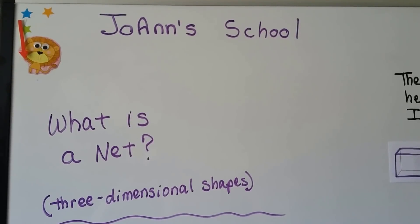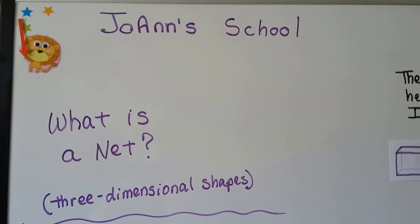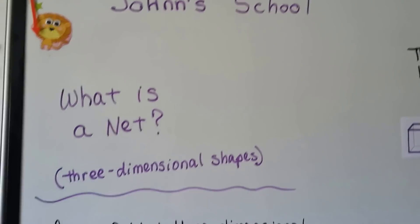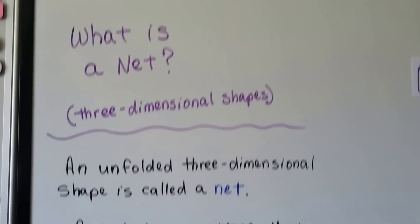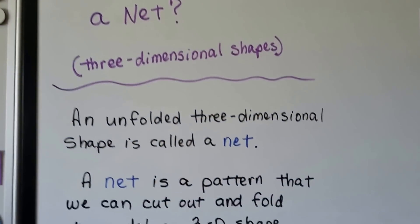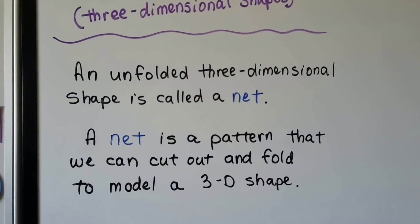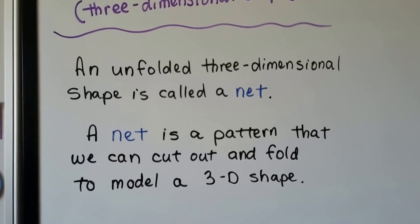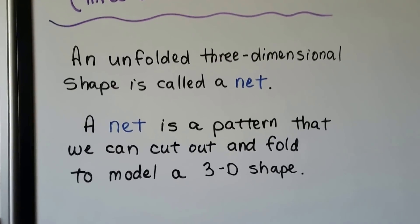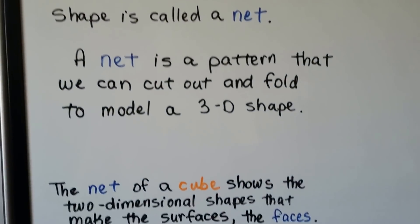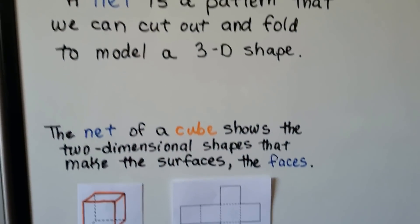We're going to talk about nets, and these are for three-dimensional shapes. An unfolded three-dimensional shape is called a net. It's a pattern that we can cut out and fold to model a 3D shape.